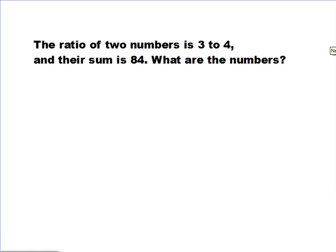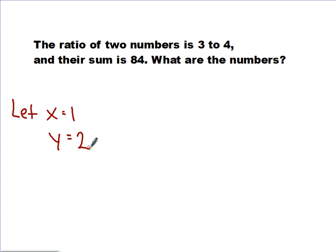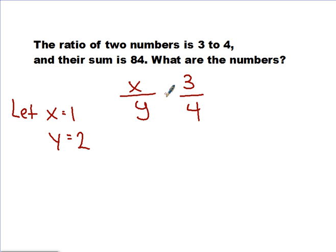The next thing we're going to do is called statements of equality problems. We're going to do two examples. The first one says: the ratio of two numbers is 3 to 4 and their sum is 84 — what are the numbers? We could set up a ratio box, but we're going to set up let statements and solve that way. We don't know what the two numbers are, so we let x equal the first number and y equal the second number.